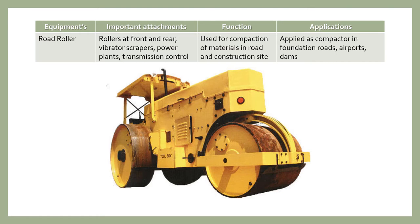The main important attachments of a road roller are: the roller placed at the front and the rear, the vibrator, scraper, power plant, and transmission controller. The rear roller is applied as a compactor in the foundation of roads, airports, dams, etc.